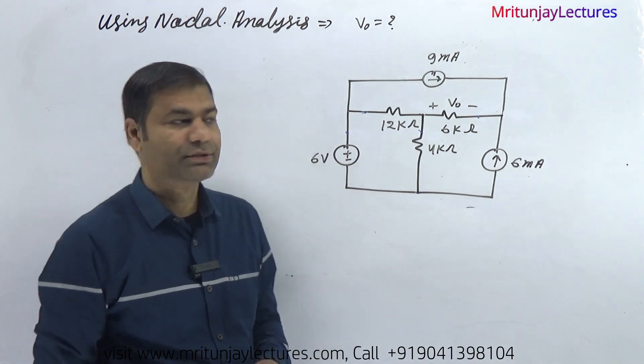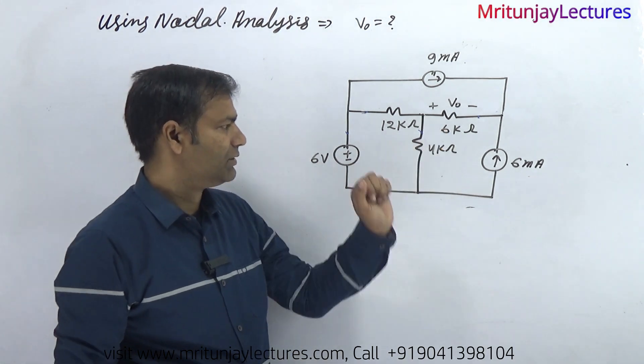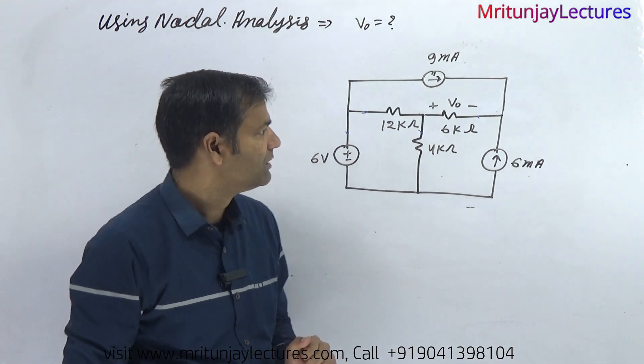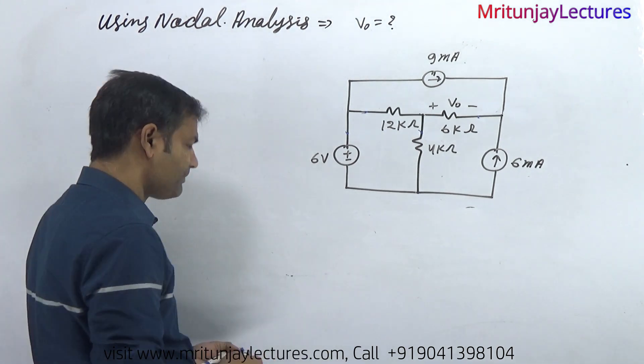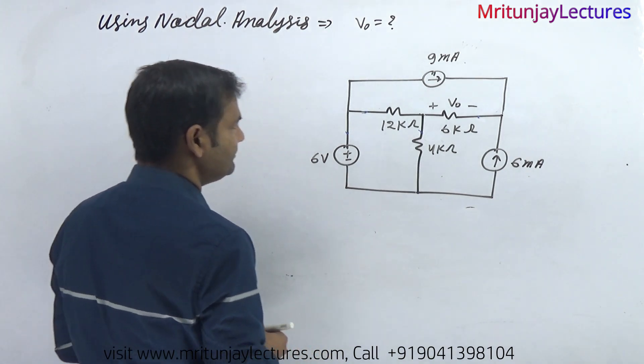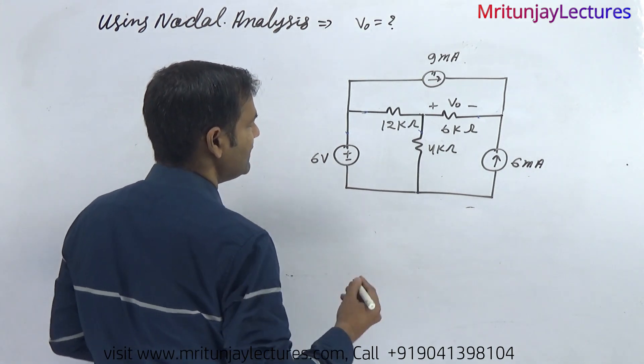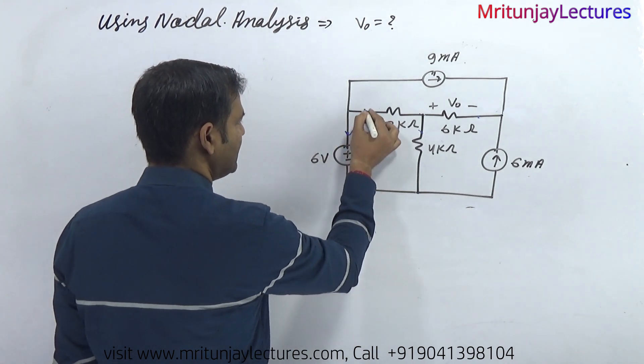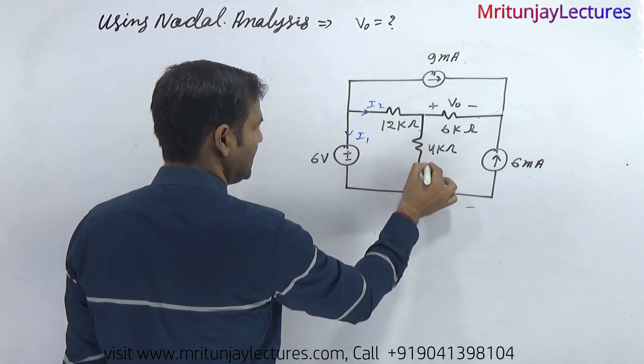Now our motto is to determine V naught. How can we determine it with the help of nodal analysis? Let's identify the branch currents: I1 here, I2 here, I3 here, and I4.